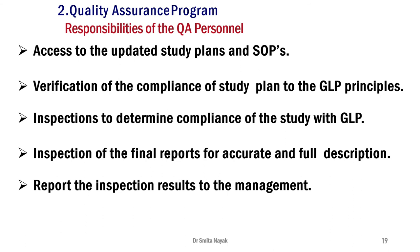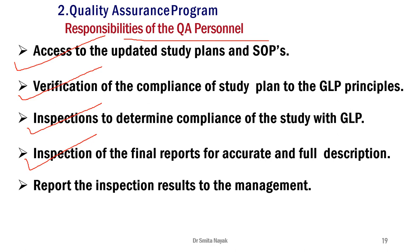The second principle is the quality assurance program. QA persons should have access to updated study plans and SOPs, verify compliance of the testing procedure to the principles of GLP, carry out frequent inspections to determine whether testing methodology complies with GLP, inspect final reports for accuracy and completeness of data, and routinely report inspection results to management. Personnel carrying out testing should be qualified and trained, report accurate data, and this data should be verified and cross-checked by the QA person.